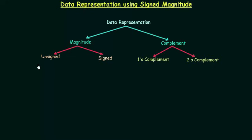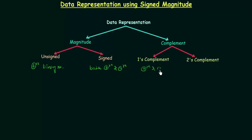In case of unsigned magnitude we can represent only positive binary numbers. In case of signed magnitude we can represent both positive and negative binary numbers. In case of one's complement representation we can represent positive and negative binary numbers, and in case of two's complement representation we can again represent positive and negative binary numbers.